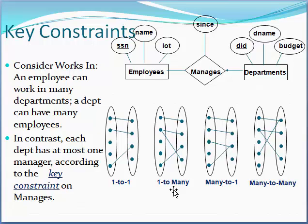A one-to-many relationship is used when for each instance in the first entity class there can be many instances in the second entity class, but for each instance in the second entity class there is only one instance in the first entity class. For example, a state has many cities, or a college has many departments. This is a one-to-many relationship.